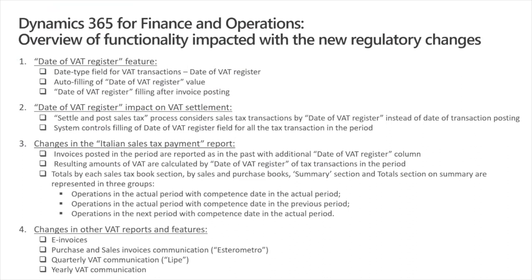The same grouping is introduced in totals by books as well. The summary part of the report will also look more complex for this scenario, as for each mentioned group of transactions, VAT amounts will also be shown in separate pages to provide more clarity and make the report more readable. The last page of the report, which is about sales tax payment, is not changed in terms of new fields or design changes — it will look completely the same as it is now — but VAT amounts will be calculated by Date of VAT Register instead of transaction date.